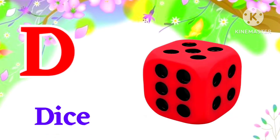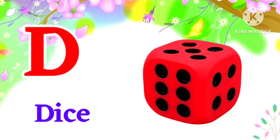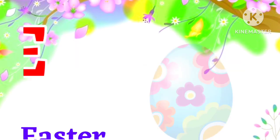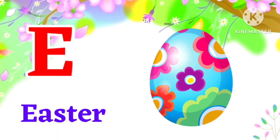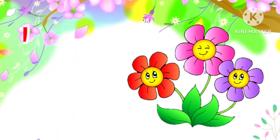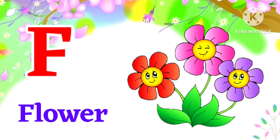D for dice. Dice means dice. E for Easter. Easter means Easter. F for flower. Flower means phool.